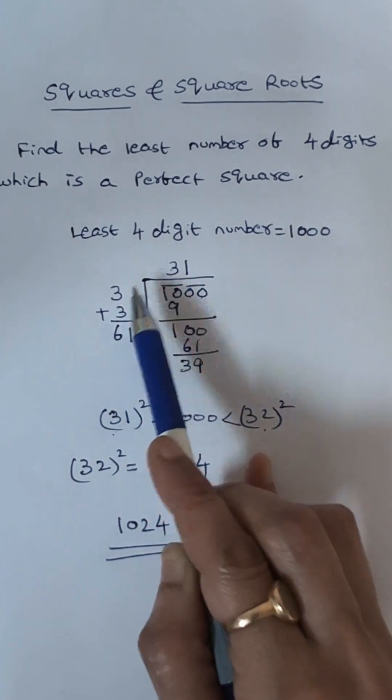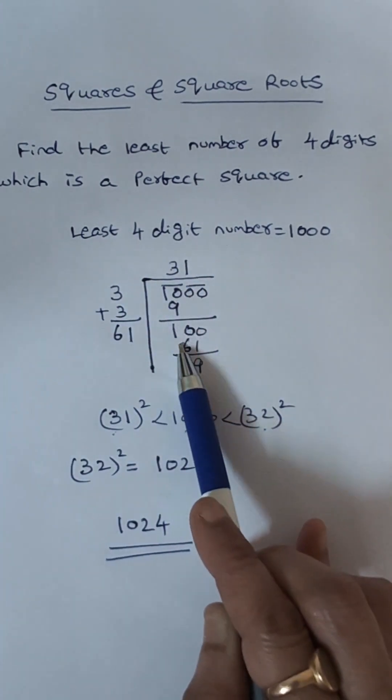So square of 3 will be 9. So first digit will be 3. So 3 times 3 is 9. 10 minus 9, 1 ho gaya.